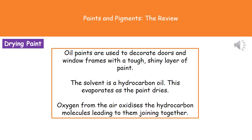Oil paints are generally used to paint doors and window frames, and they give a tough, shiny layer. The solvent in oil paints is a hydrocarbon oil, and that's what evaporates as the paint dries. However, at the same time, another reaction is occurring: the oxidation of the hydrocarbon molecules. Oxygen from the air reacts with those hydrocarbon molecules, oxidizes them, and that makes them join together.